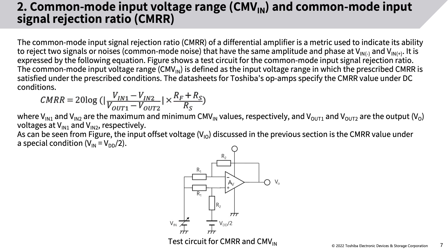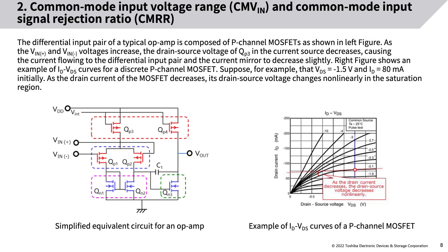The common mode input voltage range CMV is defined as the input voltage range in which the prescribed CMRR is satisfied under the prescribed conditions. Toshiba's op-amp datasheets specify the CMRR value under DC conditions where VIN1 and VIN2 are the maximum and minimum CMV values, and VOUT1 and VOUT2 are the output VO voltages at VIN1 and VIN2 respectively. The input offset voltage VIO is the CMRR value under a special condition where VIN equals VDD/2.